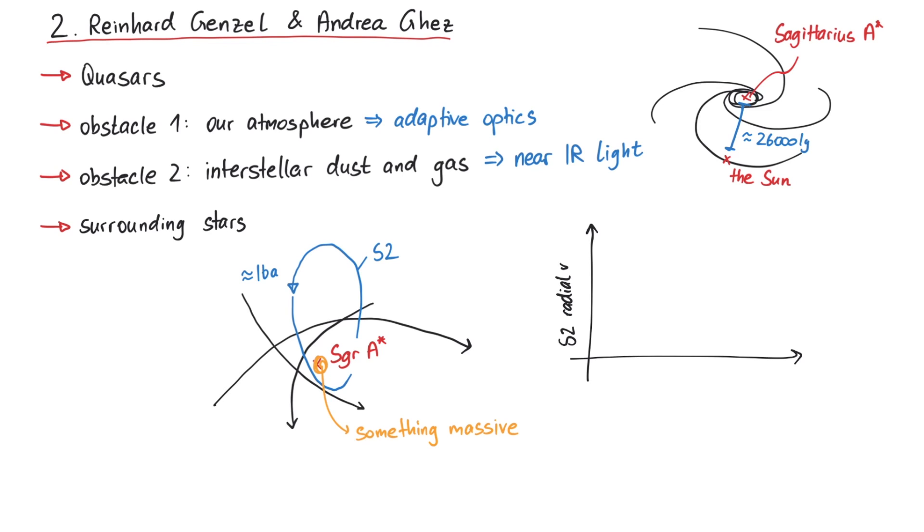And by measuring velocities, they concluded that this massive object is unexpectedly small and appears to be at the same position as the quasar Sagittarius A*. The measurements of both teams agreed perfectly. And together with Penrose's work on the connection between quasars and black holes, this led to the conclusion that there is a supermassive black hole at the center of our galaxy, with a mass of over 4 million times the mass of our sun.